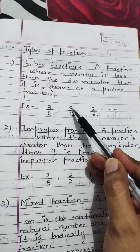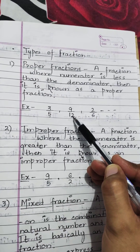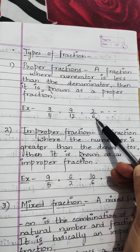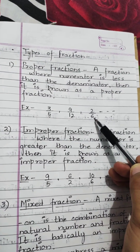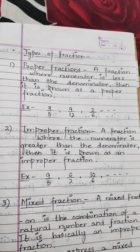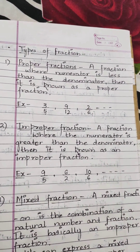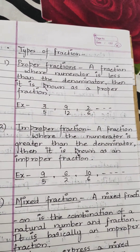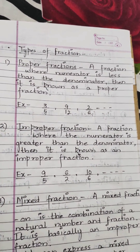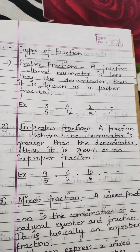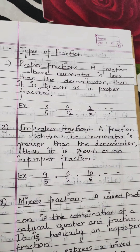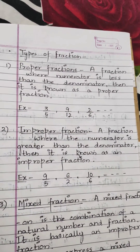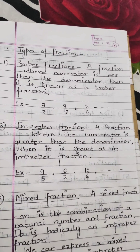9 upon 12: again numerator is less than the denominator. 2 upon 6: again numerator is less than the denominator. Keep this in mind — whenever we talk about a proper fraction, the numerator is always less than the denominator.